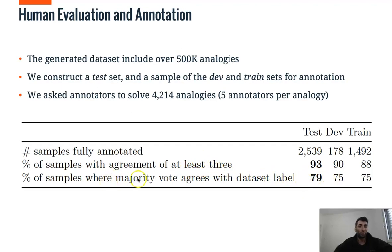And in that 79% of the cases, the majority vote, the label agreement of the annotators, agrees with the data set label. This is from the automatic generation part.